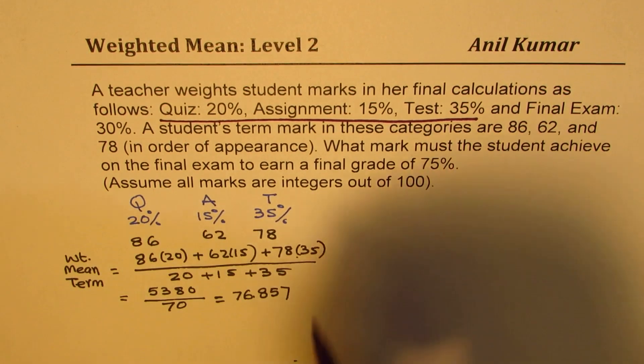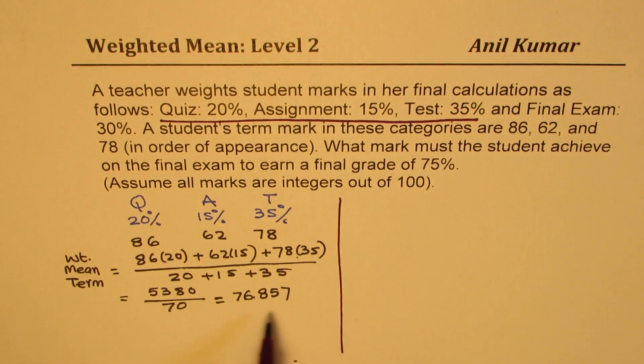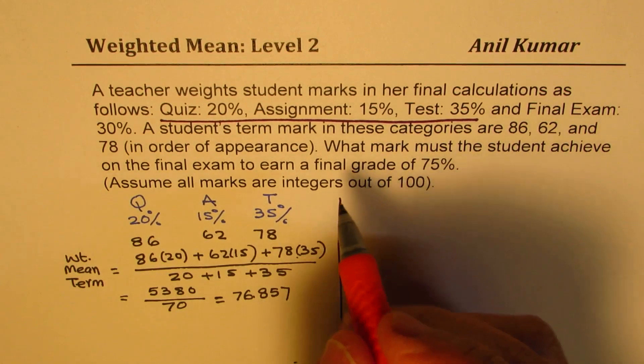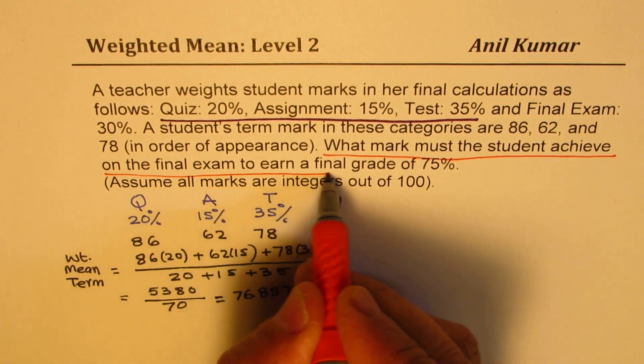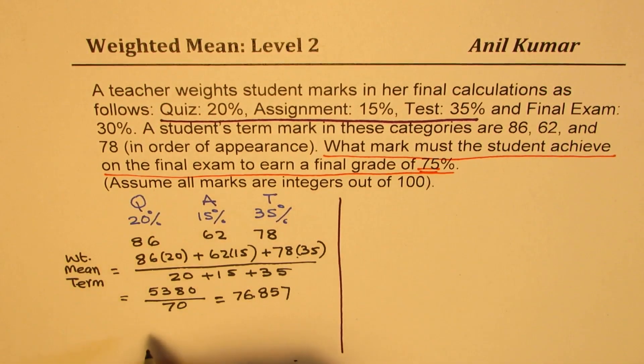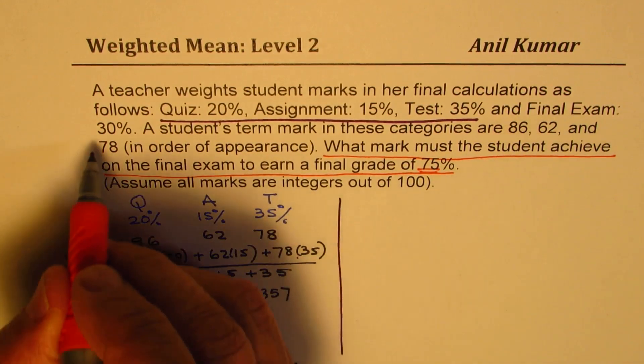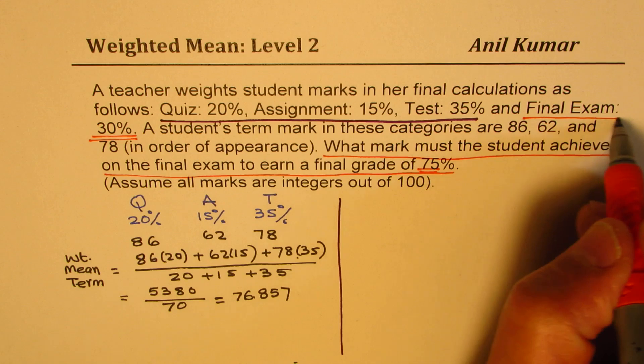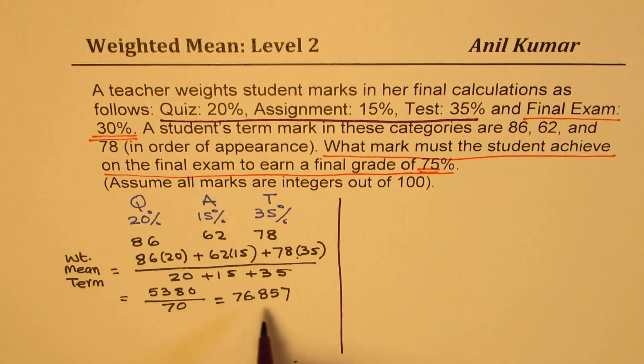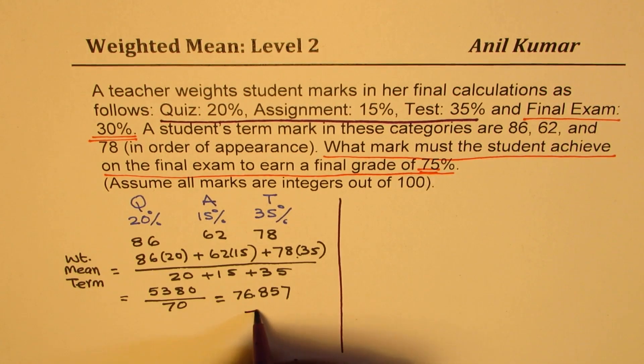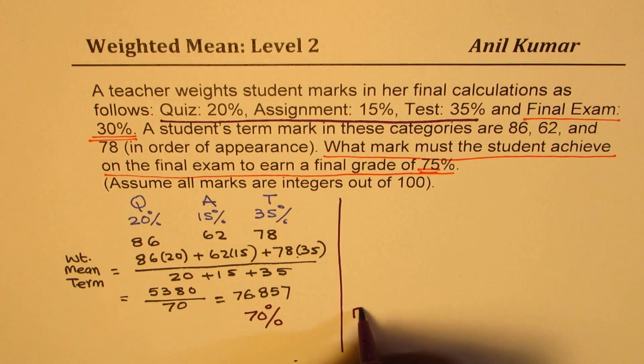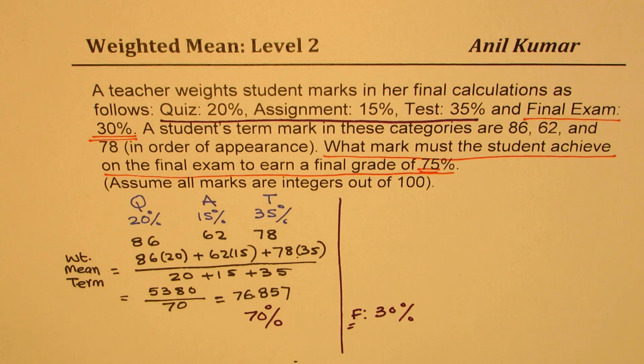So that is the weighted mean for the term. We have done one part of it, that is we have found the weighted mean. Now the real question here is: what mark must the student achieve on the final exam to earn a grade of 75%? And the weight for the final is 30%. So that is to say that this average has a weight of 70% correct, and the final has a weight of 30%. We need to find this number of marks, correct?